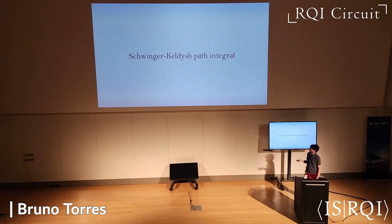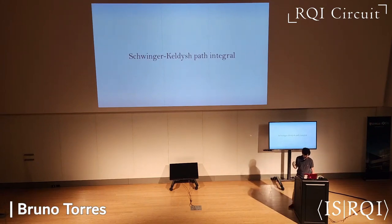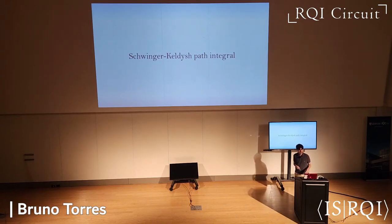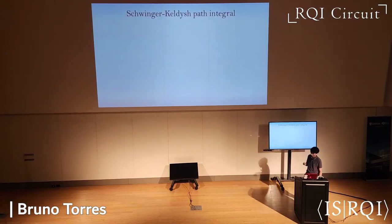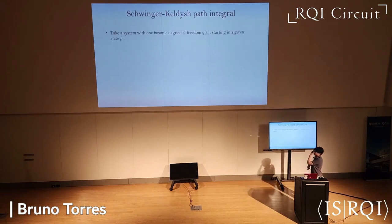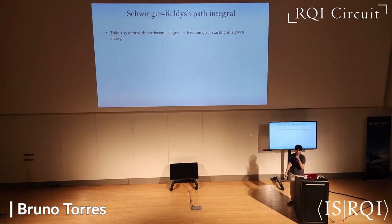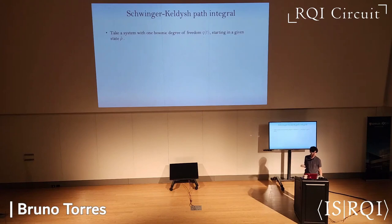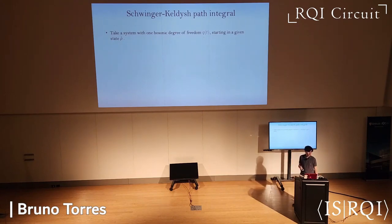Now I'll introduce the second piece of the puzzle: the path integral technique I'm calling the Schwinger-Keldysh path integral. I'll describe the basic elements so we can understand how the proof technique works. The story goes like this: take a system. For simplicity, I'll assume one bosonic degree of freedom denoted by Q — the equations will be shorter, but it will be evident how it generalizes to the actual case of interest.